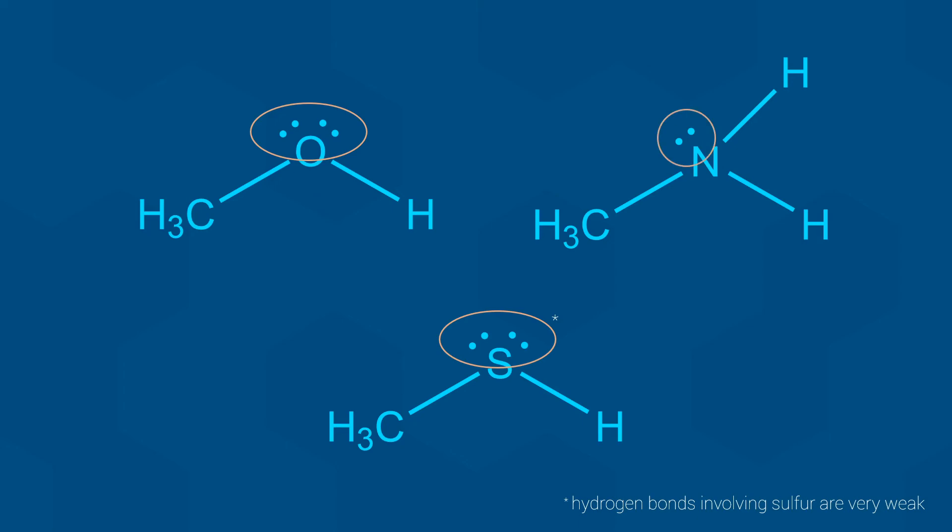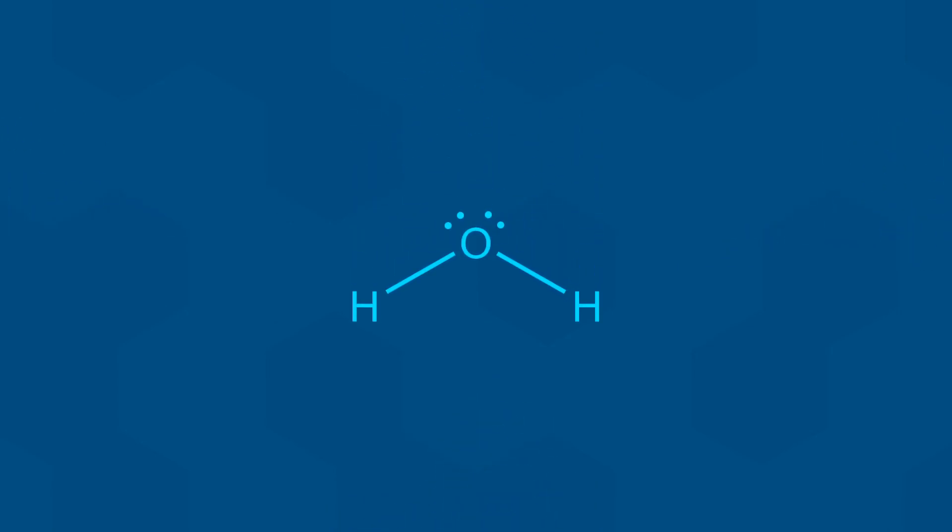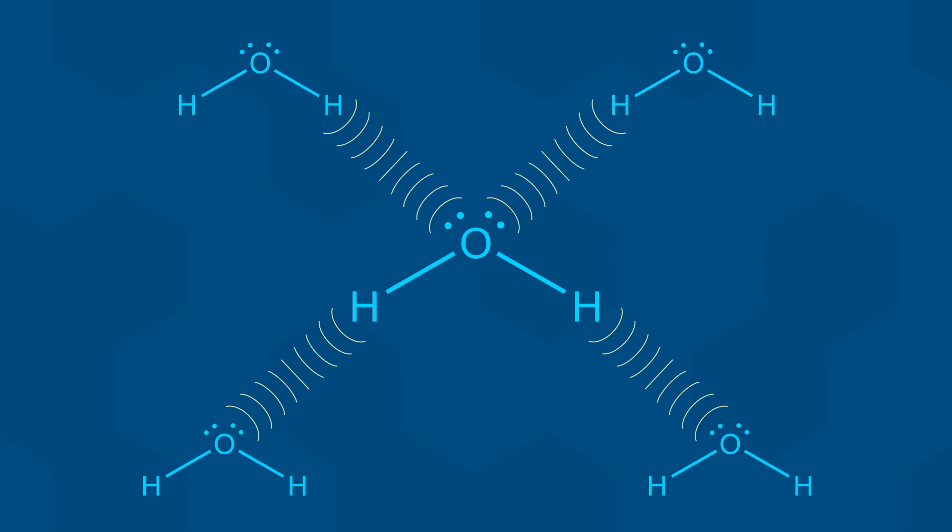A great example of this in action is of course water. Water molecules have two available hydrogens and two available lone pairs of electrons. This means each water molecule can donate two hydrogen bonds and accept two hydrogen bonds. In other words, every water molecule can make four hydrogen bonds with its neighbors.